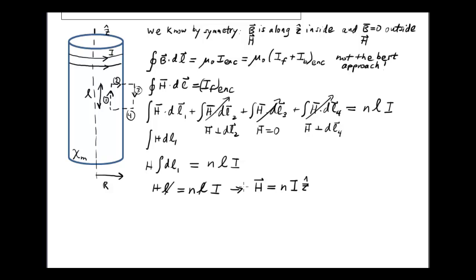This is what H is inside, and here's the beauty of this method. Once we know H, we don't even have to worry about the magnetization because we can directly find B. Now we can go back to our expression that B is equal to mu naught times one plus the magnetic susceptibility times H. And so we're left with B is just mu naught times one plus chi-m times n times I in the z-hat direction. So the magnetic field inside this material is a very simple expression that comes directly from the solution using Ampere's law to find H.